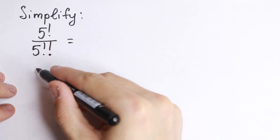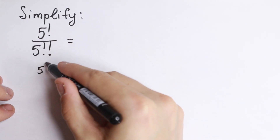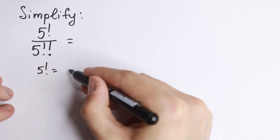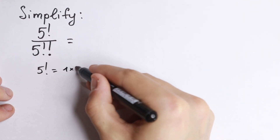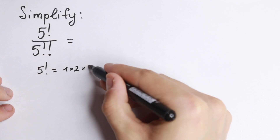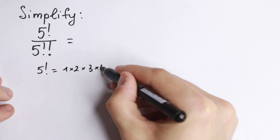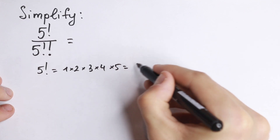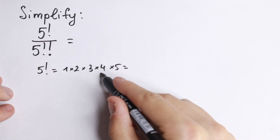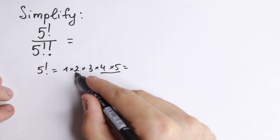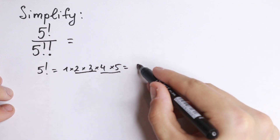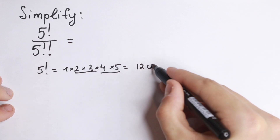On the first side, we all know that 5 factorial will be equal to 1 times 2 times 3 times 4 and times 5. So we all know that this will be equal to 20 times 6, which equals 120.